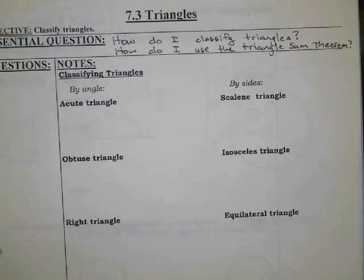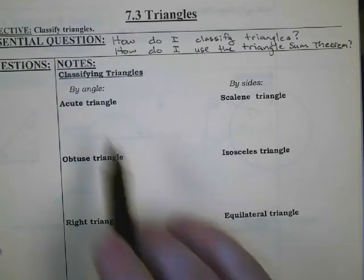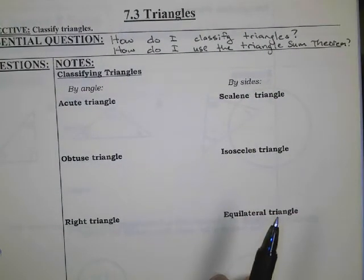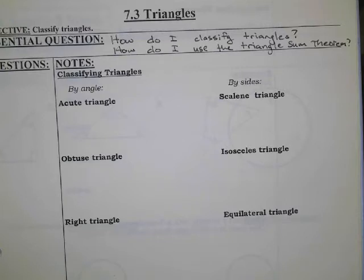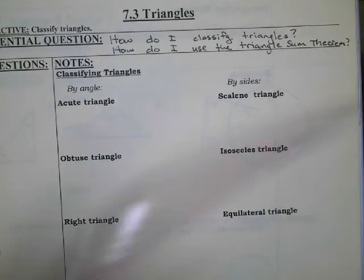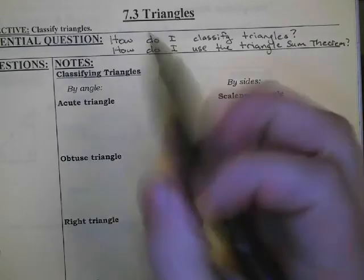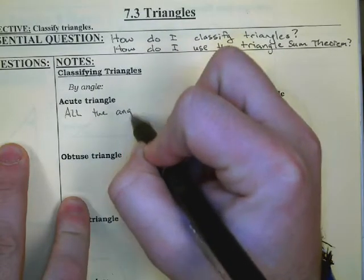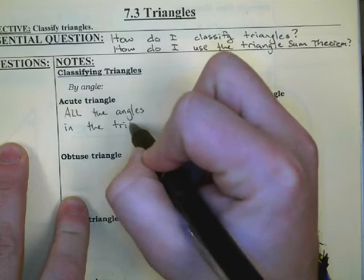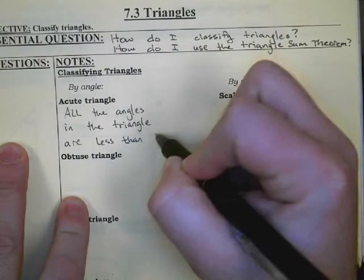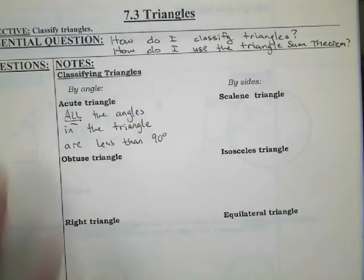We'll first begin by classifying triangles. There are two ways to classify triangles — we can either classify them by angle or by sides. The first angle classification is the acute triangle, where all the angles in the triangle are less than 90 degrees. It's very important that all of them are less than 90 degrees.